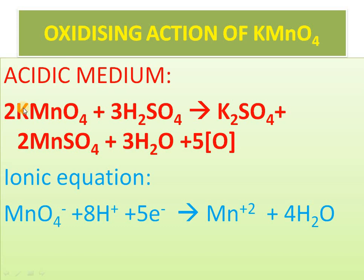If you divide: K has valency +1, so 2K+. Then 2K+ + 2MnO4−. Hydrogen has +1 valency, so 3 × 2 = 6H+, and 3SO4 2−. On the product side: 2K+ and SO4 2−; 2Mn2+ and 2SO4 2−; and water remains as such. After cancelling the common K+ and sulfate ions, you get the final ionic equation. Here also, Mn goes from +7 to +2 — a gain of 5 electrons — reduction takes place, confirming KMnO4 acts as oxidizing agent in acidic medium with sulfuric acid.